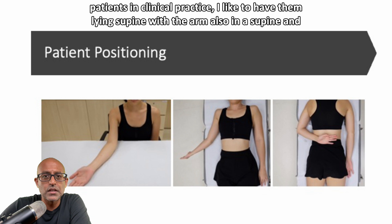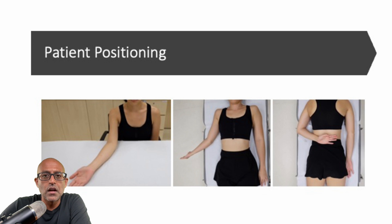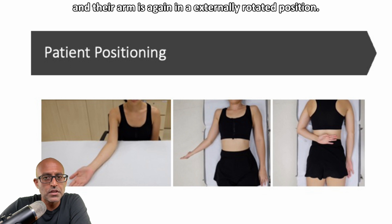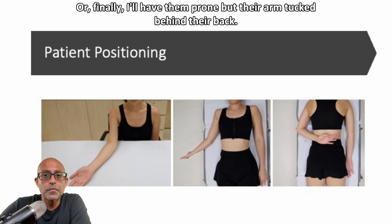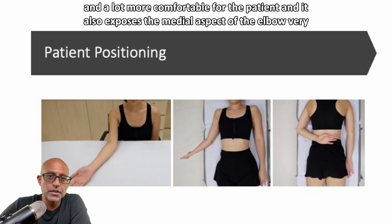Often when I'm scanning patients in clinical practice, I'll either have them lying supine with the arm also in a supine and slightly externally rotated position, or I'll have them seated so that the elbow is resting on the examination couch with the arm again in an externally rotated position. Or finally, I'll have them prone with the arm tucked behind their back. This is a lot more stable and comfortable for the patient, and it also exposes the medial aspect of the elbow very easily.